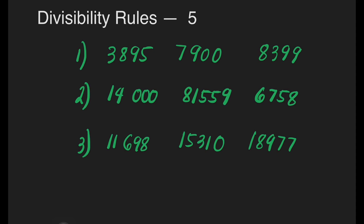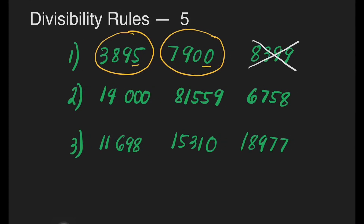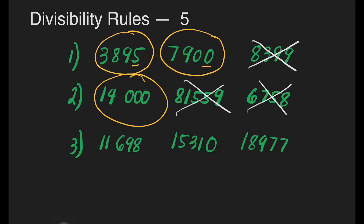Let us have some exercises. Encircle numbers that are divisible by 5. For number 1, this one is divisible by 5 because it ends with 5, and this one is divisible by 5 because it ends with 0. Remember, a number is divisible by 5 when it ends with 5 or 0. For number 2, the first number — yes — it is divisible by 5. The second? No. The third? No. For the third set: first number — no; second number — definitely yes; third number — no.